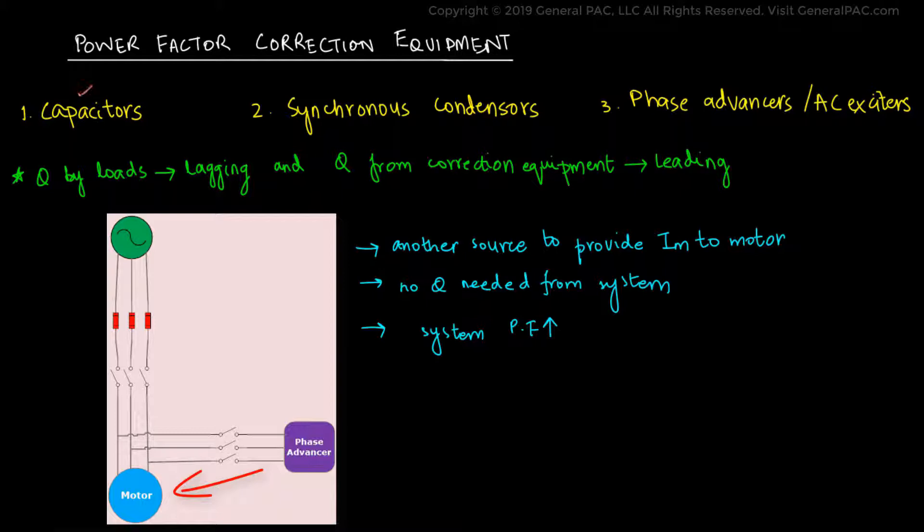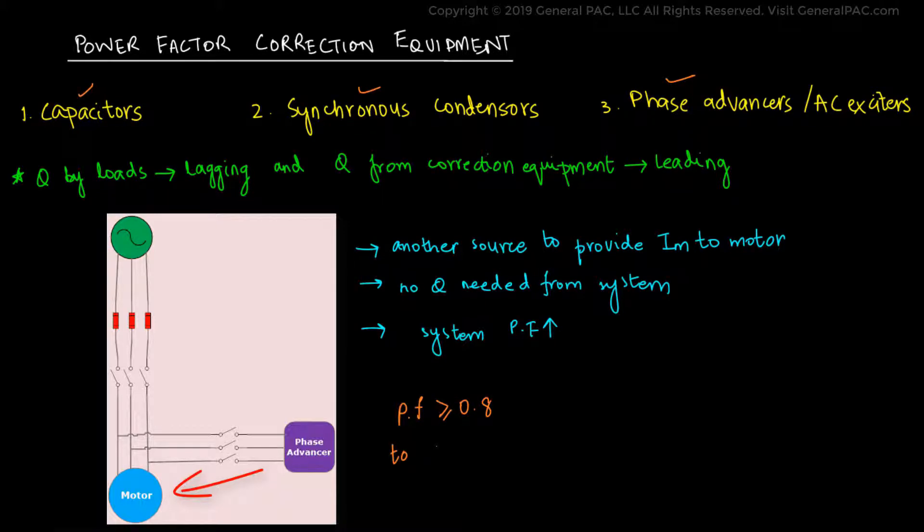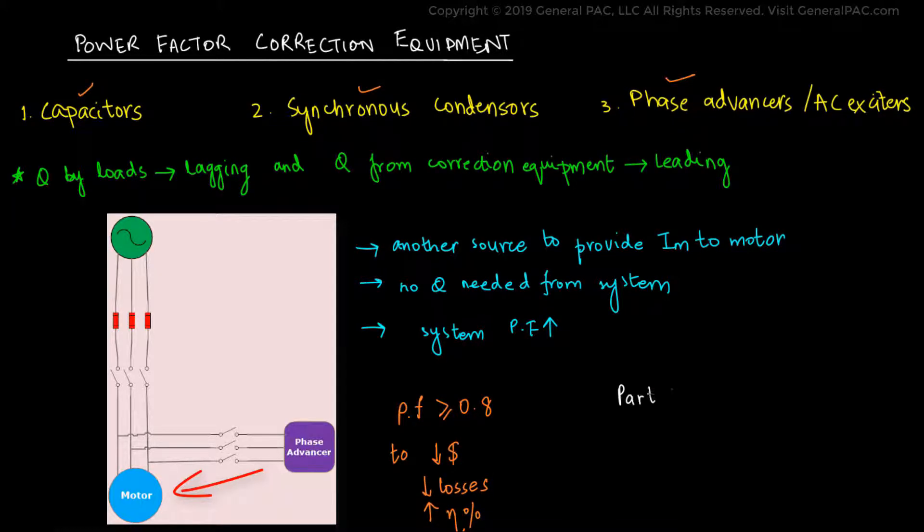To summarize it all, there are multiple ways to achieve power factor correction and it is generally recommended to keep the power factor above 0.8 in order to lower utility costs, minimize the system losses, and improve the overall system efficiency. In part 4, we will solve practical examples using mathematical calculations employing the capacitor bank correction technique.